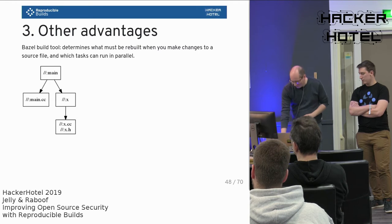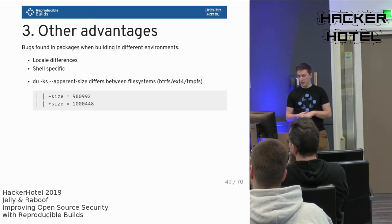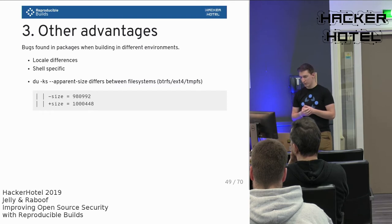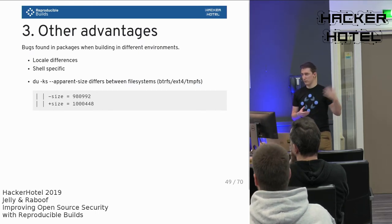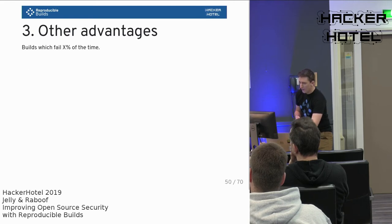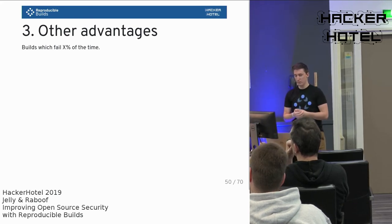These kinds of caches work much better if your build is reproducible — bit-for-bit the same result — and you can even use a distributed cache in your organization. Other advantages include bugs found when building in different environments: for example, sorting with different locales gives different outputs, or shell-specific bugs. A bug in Arch's pacman package manager was that it calculates the size of a package, but the calculation method differs per filesystem, which introduced non-deterministic packages. Builds have also been found that fail a percentage of the time, like race conditions when running on multiple threads.